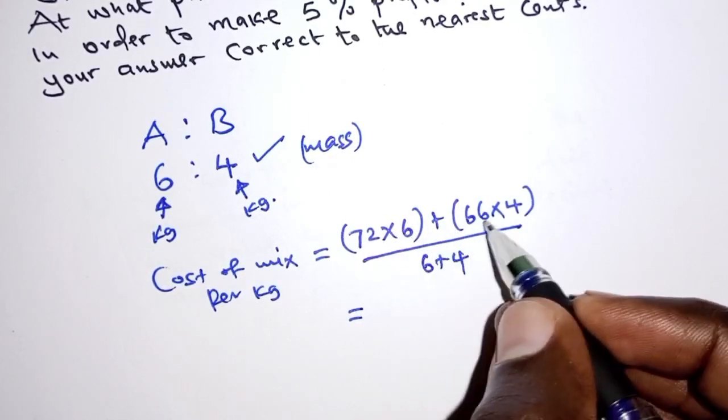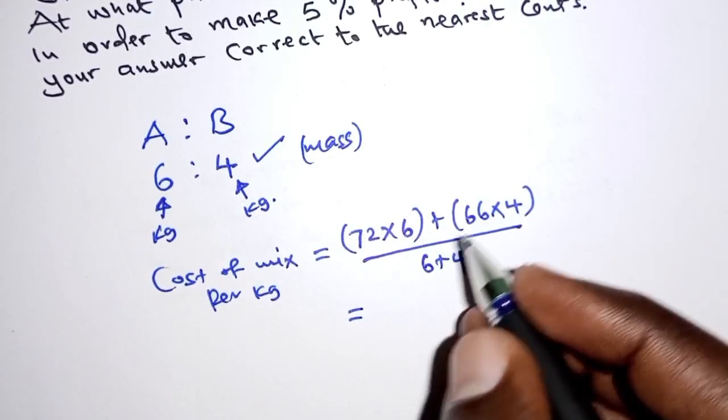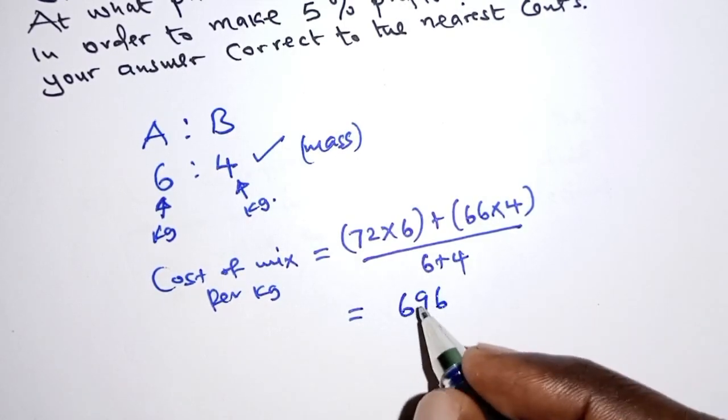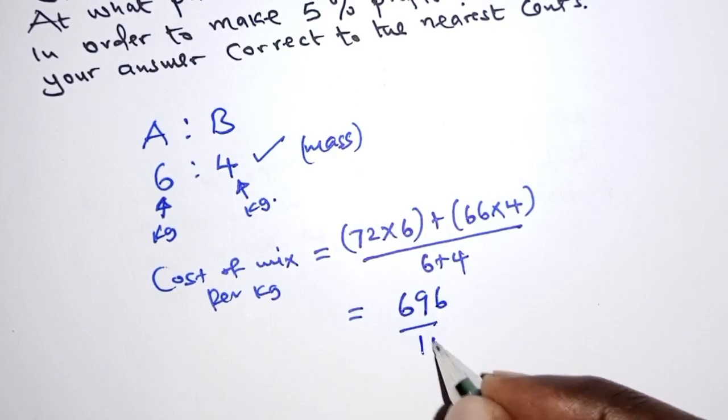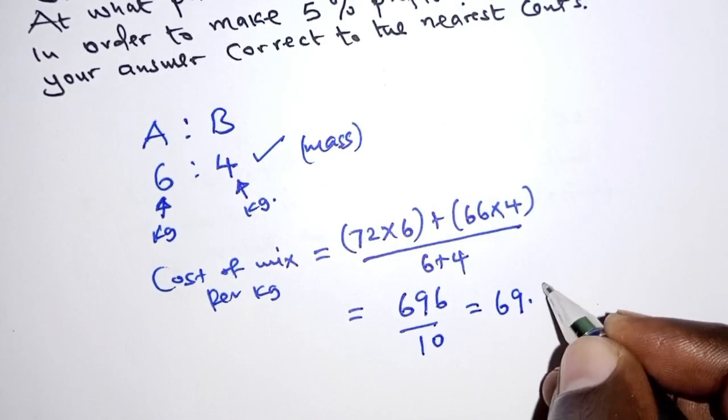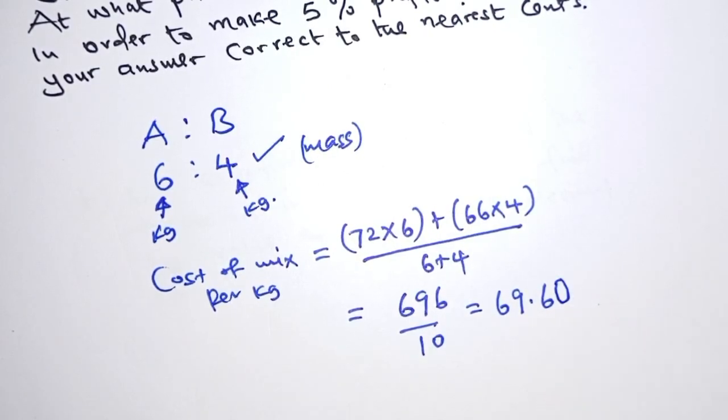72 times 6 plus 66 times 4. From my calculator, I'm able to get a total of 696, and then on the denominator we have 10. This should give us 69 shillings and 60 cents per kilogram.